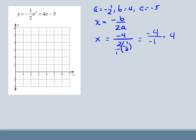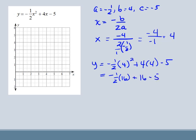And then I'm going to plug that into my original equation and solve. So I'm going to get y equals negative 1 half times 16 plus 16 minus 5. So I get negative 8 plus 16 minus 5. Remember, we're following order of operations. Negative 8 plus 16 is 8. And then minus 5 is 3. So my vertex, we take my x and the y. So my vertex is 4 and 3.